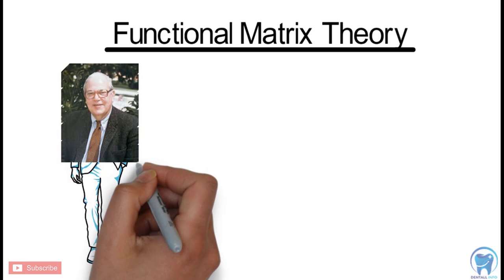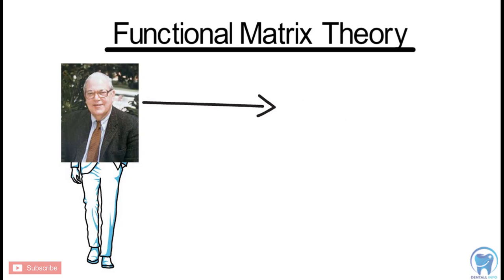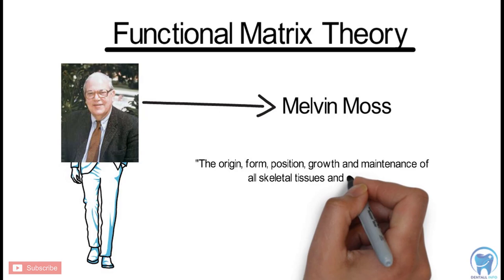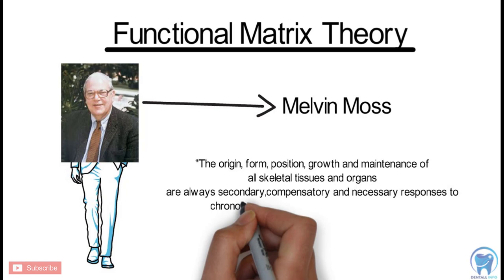The Functional Matrix Hypothesis claims that the original form, position, growth and maintenance of all skeletal tissue and organs are always secondary, compensatory and necessary responses to chronologically and morphologically prior events or processes that occur in specifically related non-skeletal tissues, organs or functioning spaces.